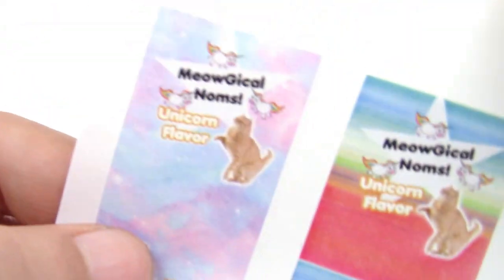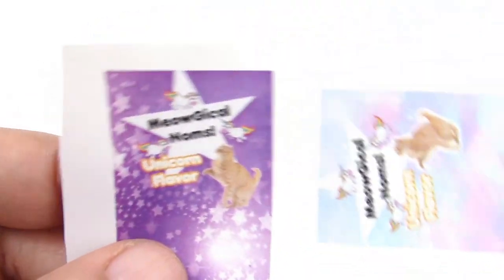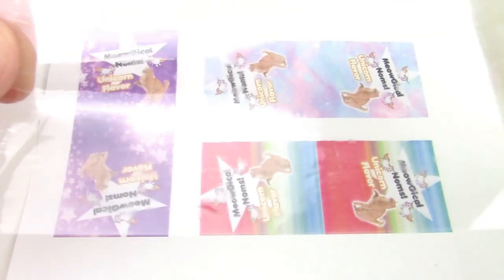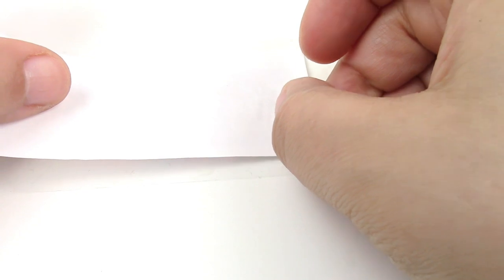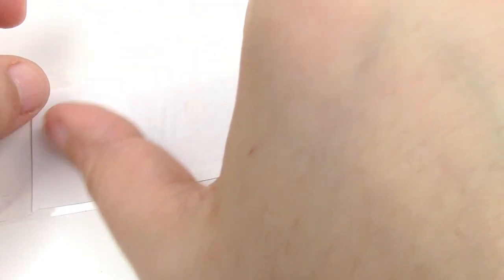We all know cats are magical creatures, so they do deserve unicorn-flavored snacks. I would imagine unicorn tasting pretty much like chicken. Now you're going to take some tape, and you're going to put the sticky side up, place the snack package right on top, and you're going to cut that out.